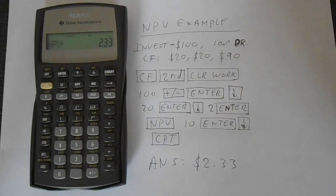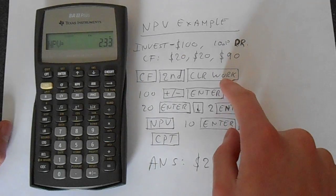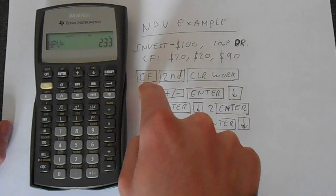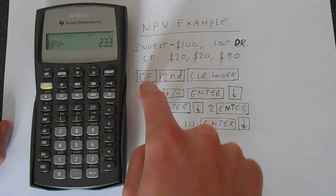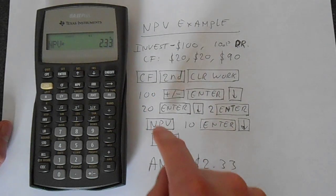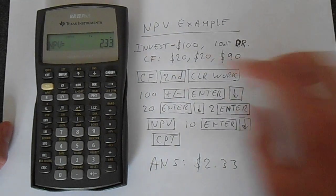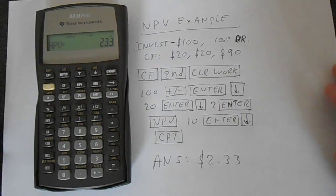So that's how you do net present value. Basically, clear the workbook, press cash flow—the CF key puts you into the mode—ensure it's cleared, enter your cash flows, then net present value, enter the interest rate, and then press compute on the net present value screen.